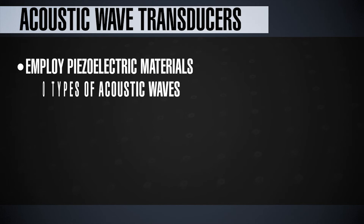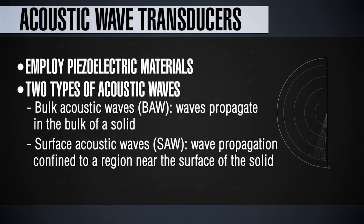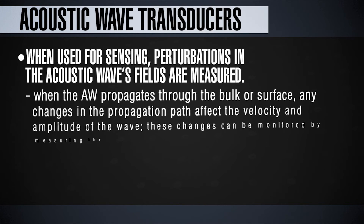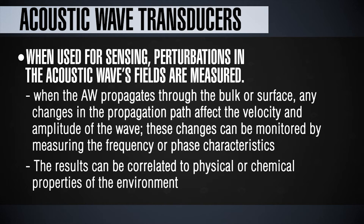Acoustic wave transducers utilize piezoelectric materials. Two types are very common: the bulk acoustic wave transducer, where acoustic waves propagate throughout the solid, and the surface acoustic wave transducer, where wave propagation is confined to a region very near the surface of the solid. When acoustic waves are used, we measure the change in wave propagation — whether through the solid or over the surface — which results in a change in the velocity and amplitude of the wave. These changes can be monitored by measuring the frequency or phase characteristics of the acoustic wave, and then correlated back to the physical or chemical properties of the environment.